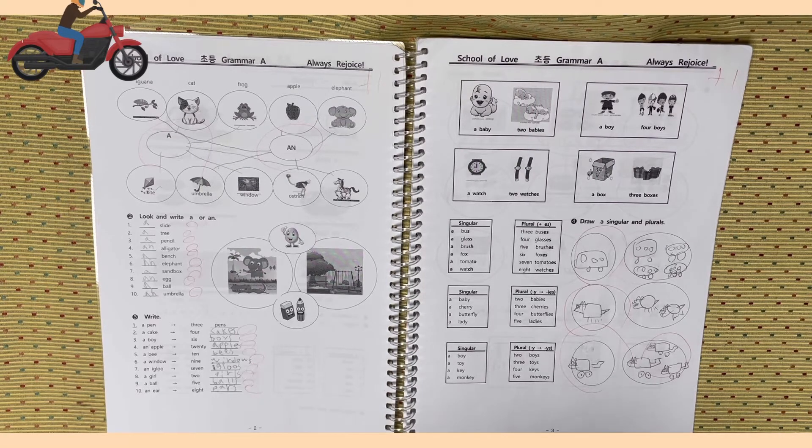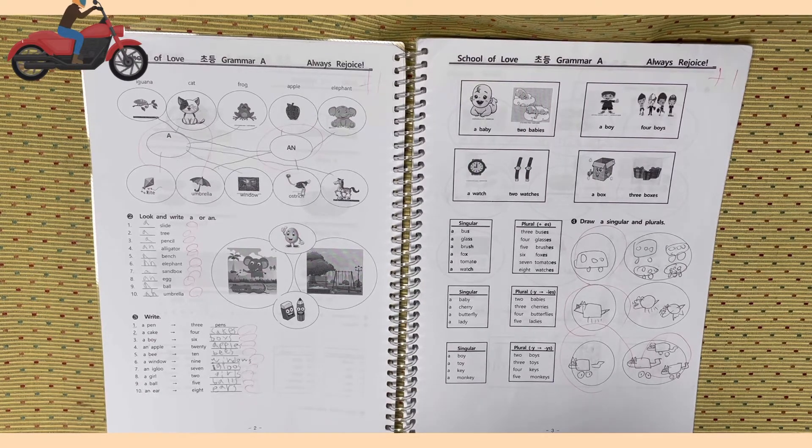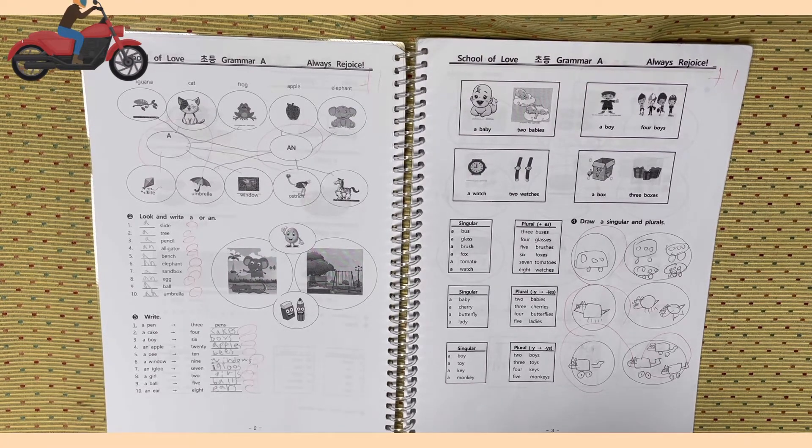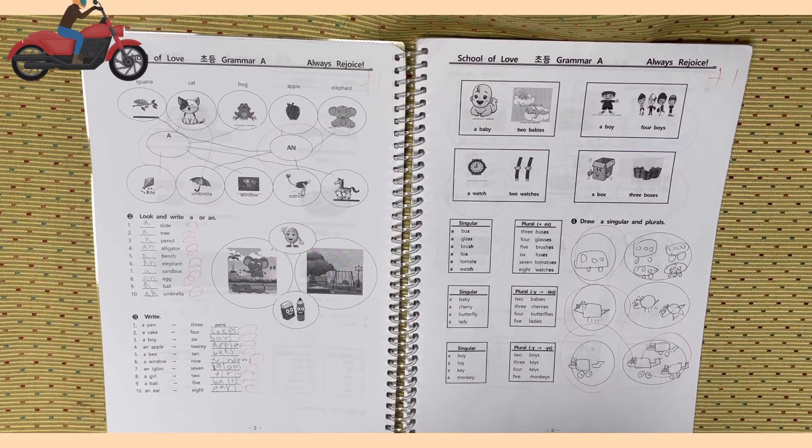Number 1. Example. A pen. 3 pens. You put S after the word. Number 2. A cake. 4 blanks. A boy. 6 blanks. Number 4. An apple. 20 blanks. 5. A bee. 10 blanks.